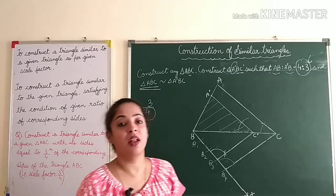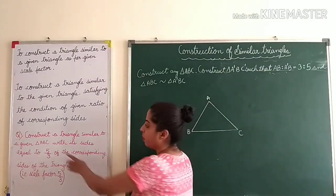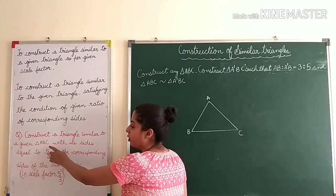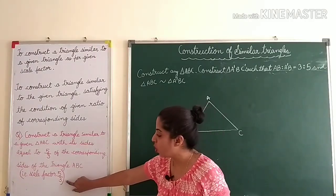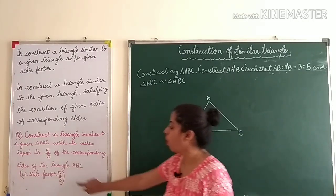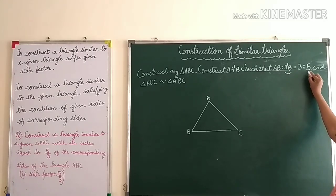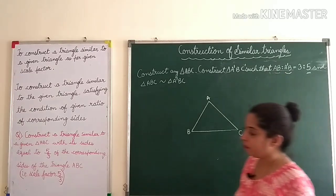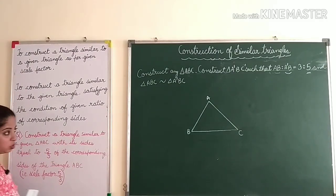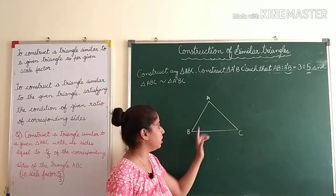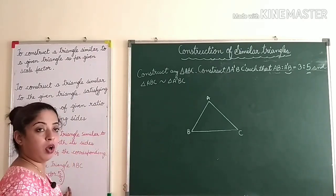Now let us take an example where the new similar triangle is bigger than the old triangle. The question is: 'Construct a triangle similar to given triangle ABC with its sides equal to 5/3 of the corresponding sides of triangle ABC.' The scale factor is 5/3 — the numerator is bigger than the denominator. Alternatively written as AB : A'B = 3 : 5, so the new triangle is bigger than the old one. We have drawn triangle ABC and need to draw A'BC' which is 5/3 of it.